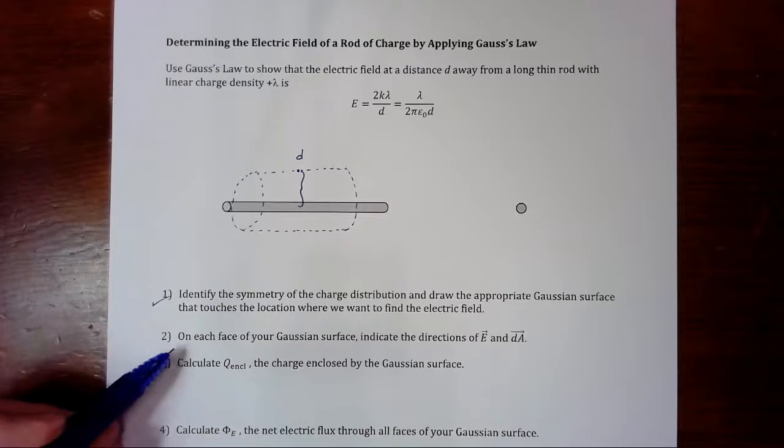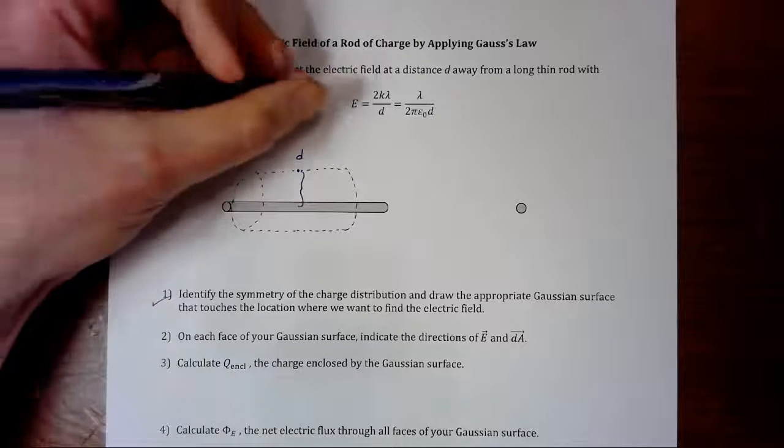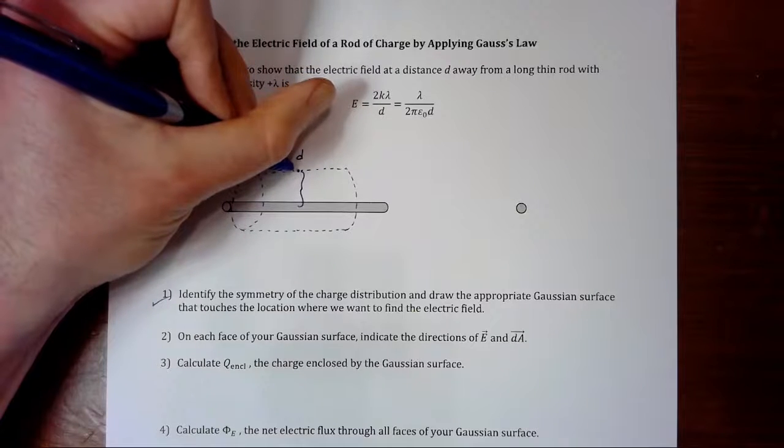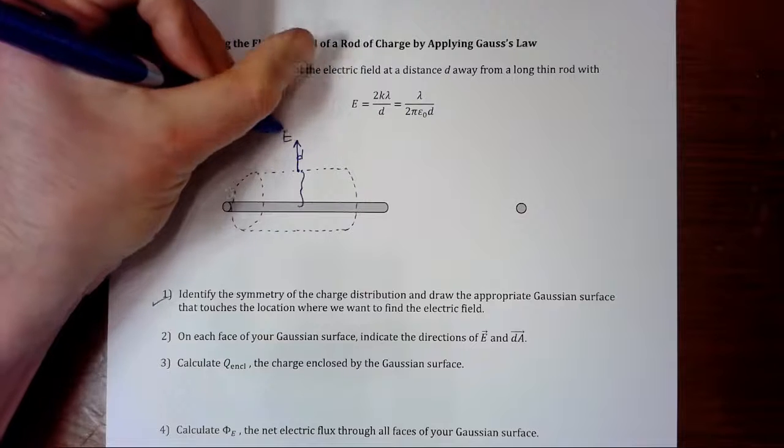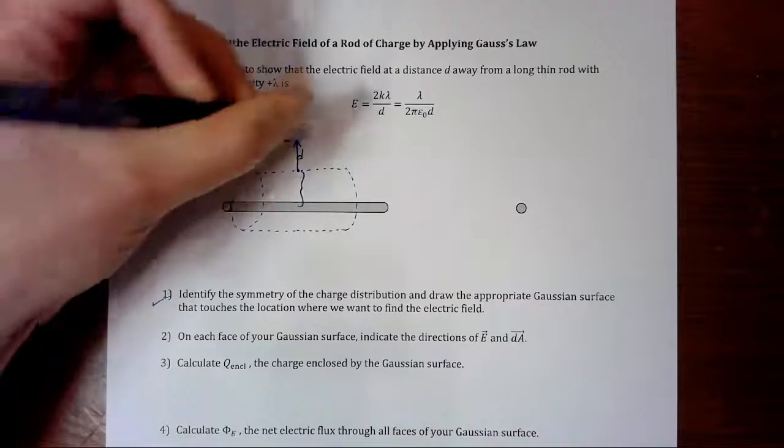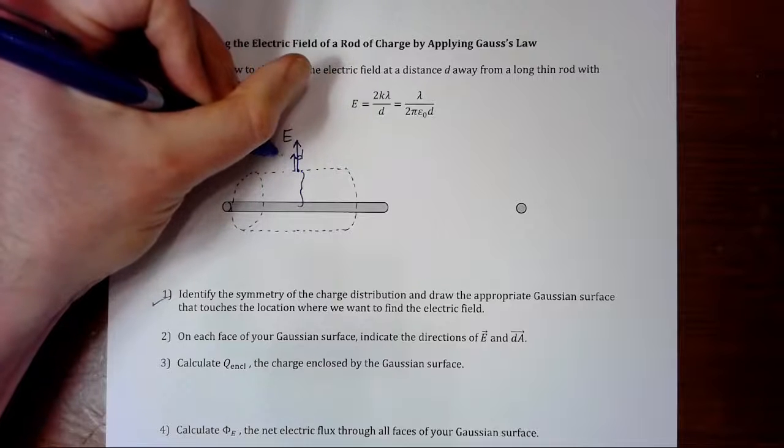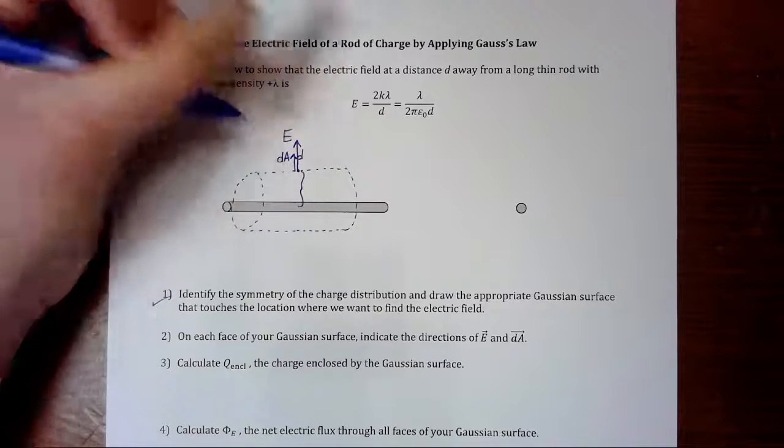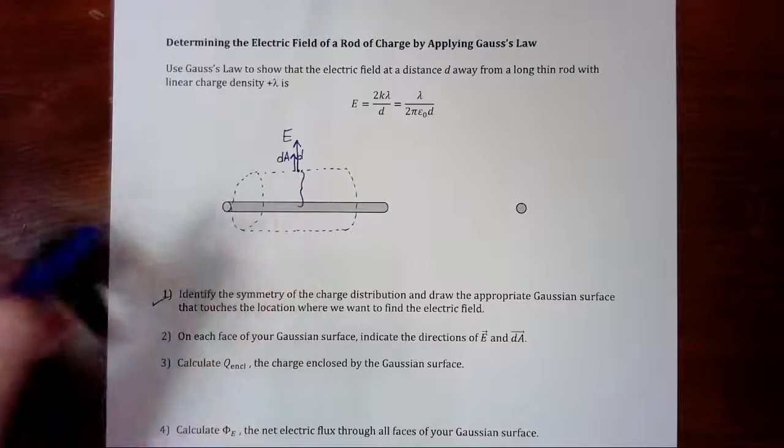Step two. On each face of your Gaussian surface, indicate the directions of E and dA. So, well, at distance d here, you know the electric field is going to be outwards. And we also know that the area vector at that point is also outwards. And they're parallel to each other here in this case.